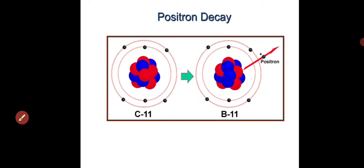This is how positron decay takes place. For example, consider carbon-11, which gives boron-11.